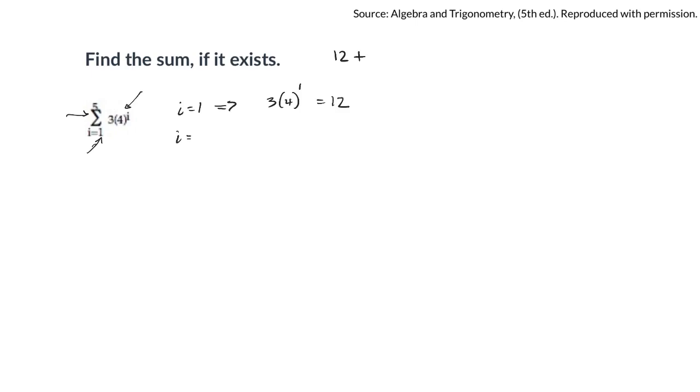Let's do the second term. So that's when i is equal to 2. So 3 times 4 squared. 4 squared is 16 times 3 is 48. So I'll do my next term.